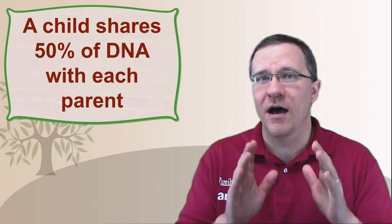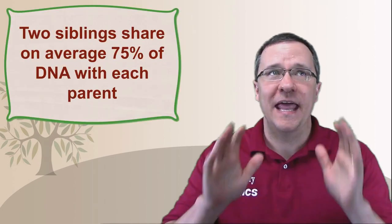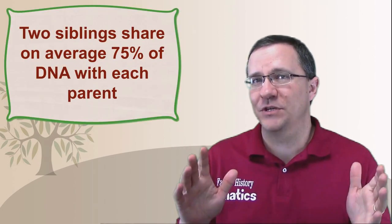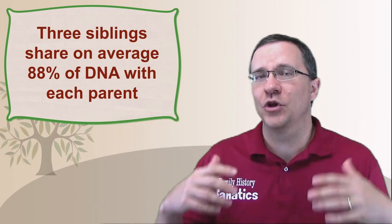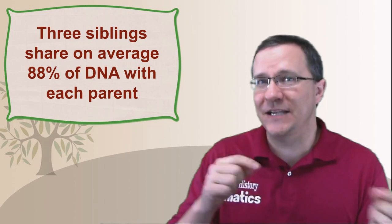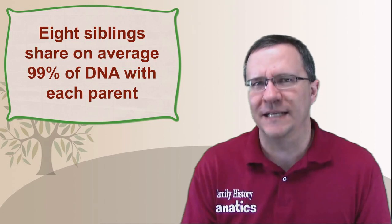We know that a single child shares 50% of each one of their parents' DNA. Theoretically, if you add another child so you have two siblings, those two siblings should share around 75% of both of their parents' DNA. Adding a third sibling, you're going to go up to 88%, and what you can see from this pattern is that half of the amount left is added on for each sibling, so each sibling adds less and less of the total DNA that your parents have. But at some point you're going to basically have all of your parents' DNA.